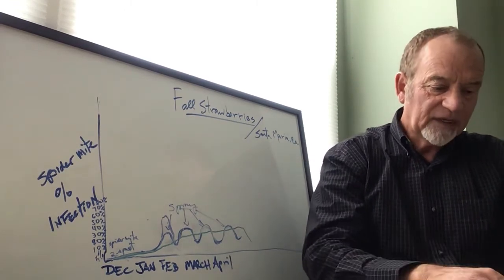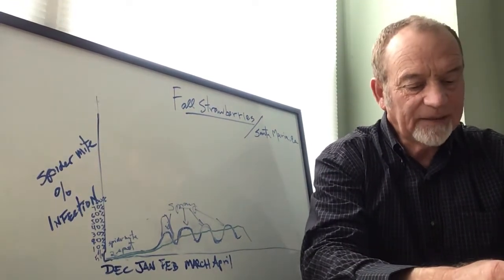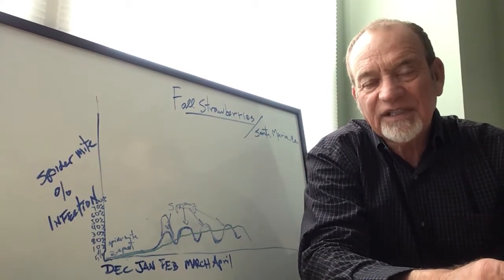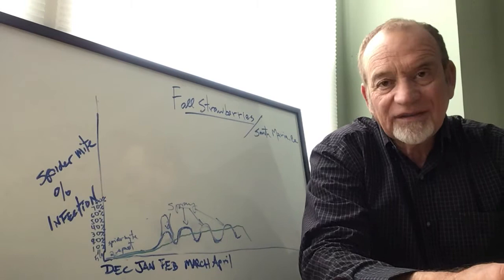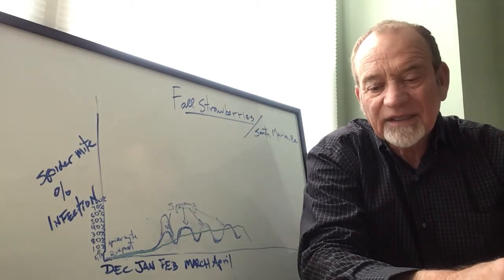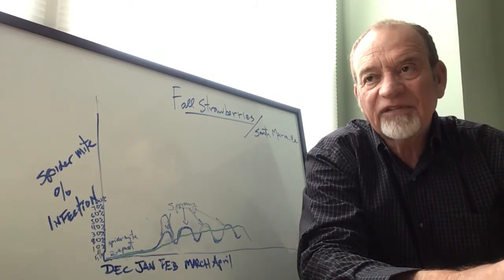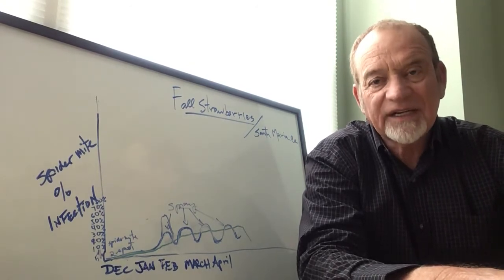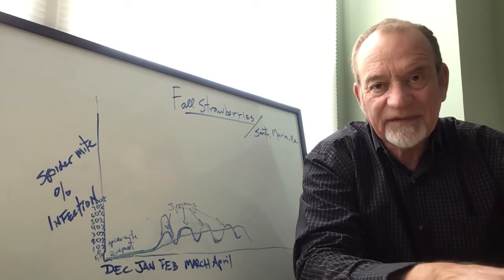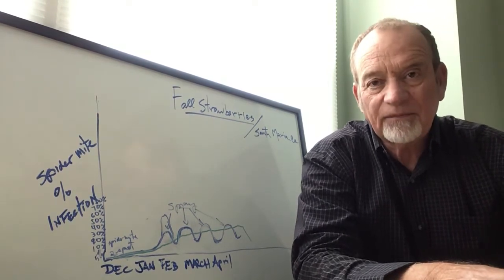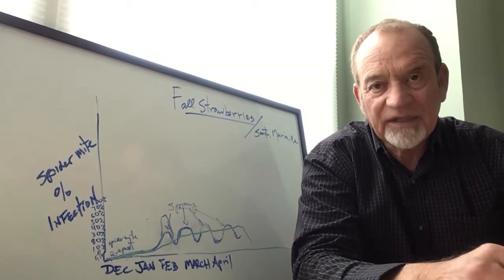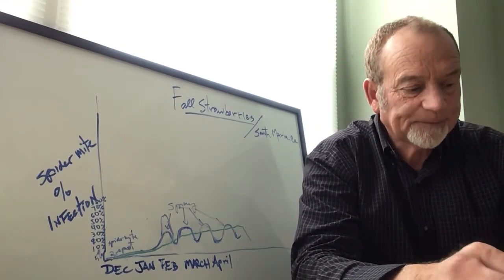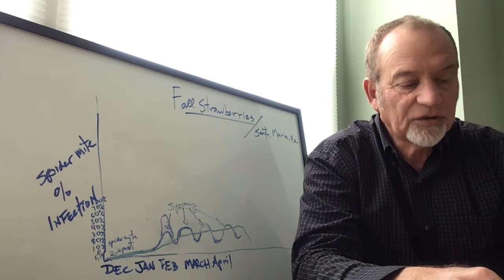The question would be: would californicus feed on persimilis? Not really. Californicus is more of a generalist; he would feed on pollen to establish himself. Persimilis is more specific—feeds on two-spot only. Californicus will feed on pollen, on lewis mite as well.